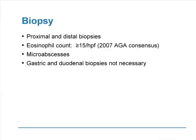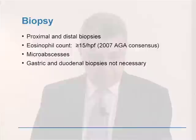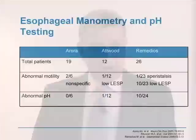Biopsies should be taken both proximally and distally, with the pathologist reporting results separately, because in GERD the eosinophils will be located mostly in the distal part. The eosinophil count should be 15 or more per high power field — this is the current consensus. Micro-abscesses may be found. Gastric and duodenal biopsies are not necessary, and all guidelines confirm they do not need to be obtained.